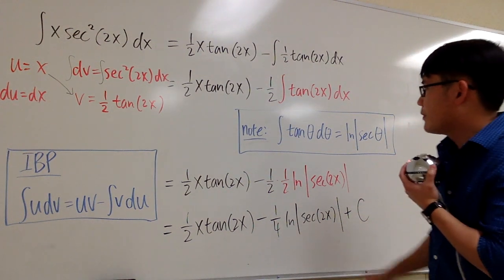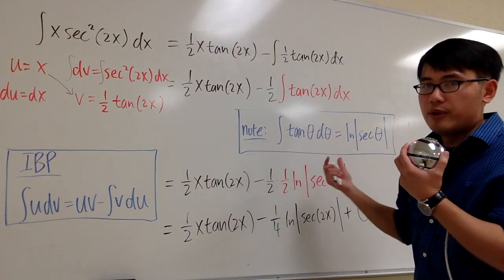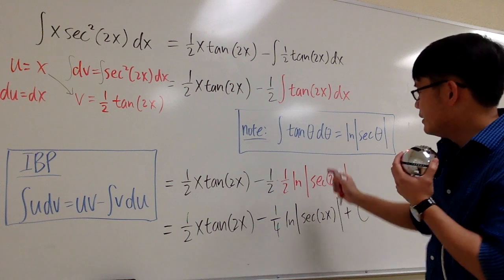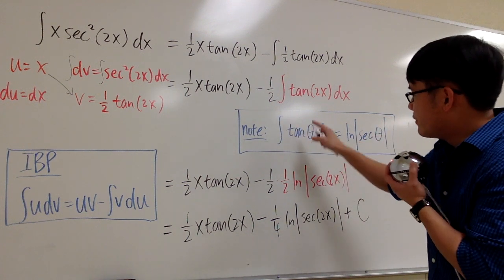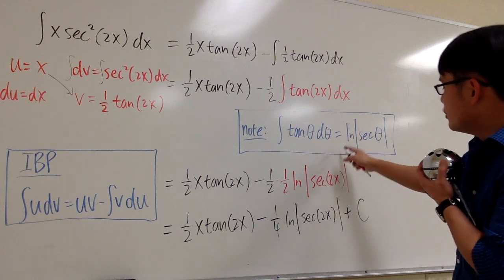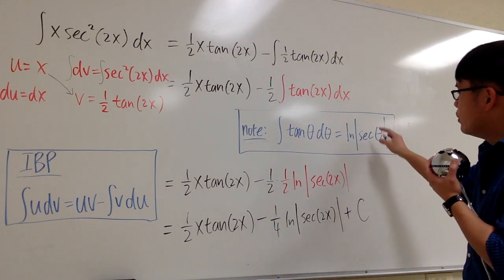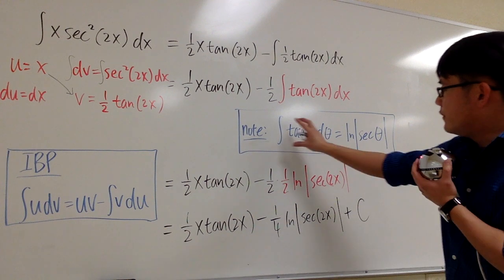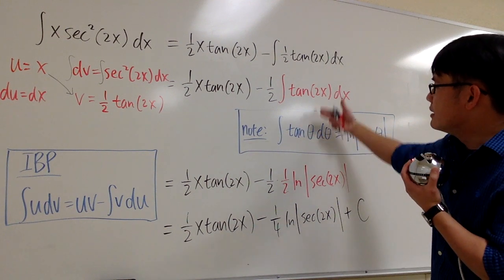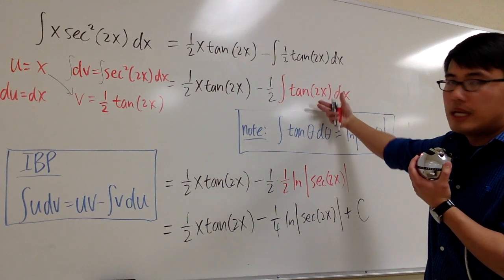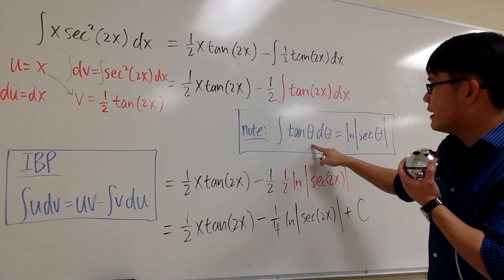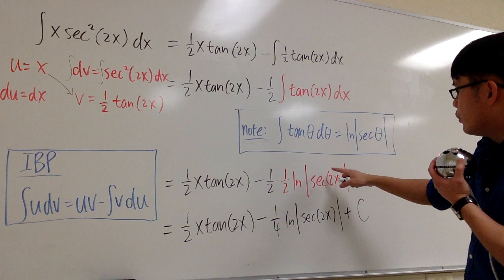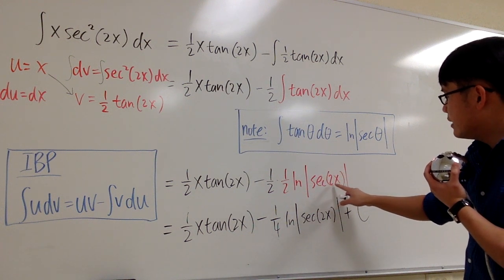And let's make a note right here. If you remember this, you can use it rather quickly. So this is something worth your time to remember. The integral tangent theta d theta is going to be ln absolute value of secant theta. So if you remember this, we can just apply this to this integral in red. However, here we have tangent of 2x. The 2x will be the theta.